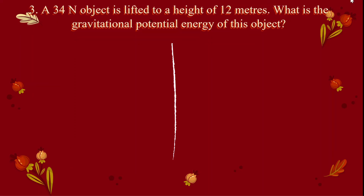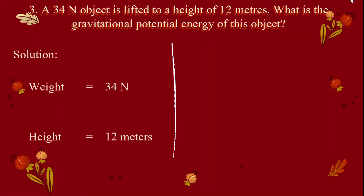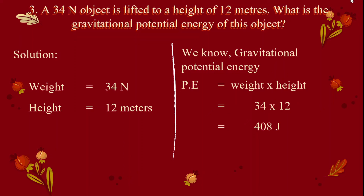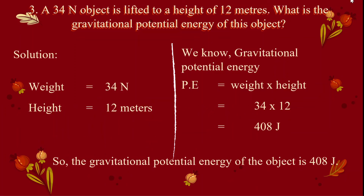Problem 3: A 34-newton object is lifted to a height of 12 meters. What is the gravitational potential energy of this object? Weight = 34 N, height = 12 m. Using GPE = weight × height = 34 × 12 = 408 joules. The gravitational potential energy of the object is 408 joules.